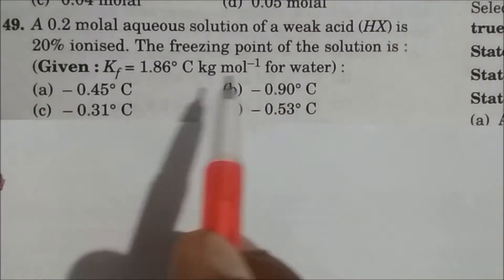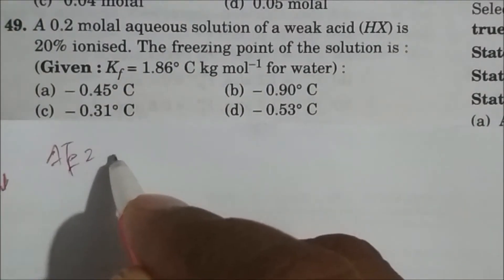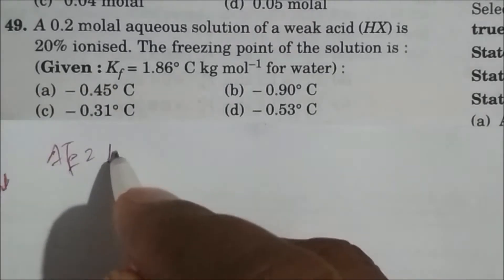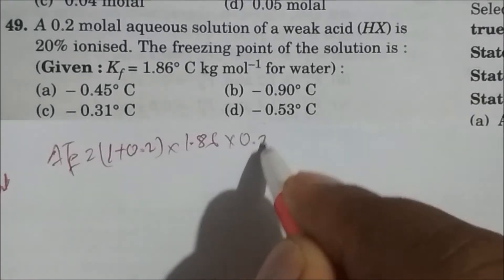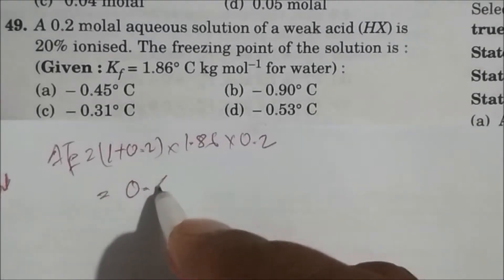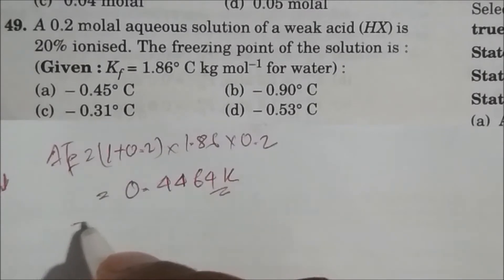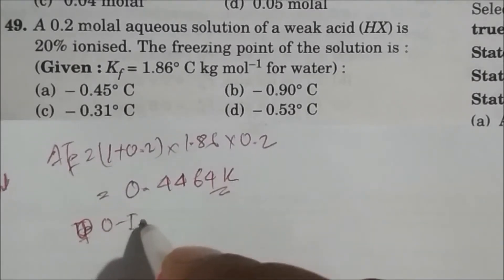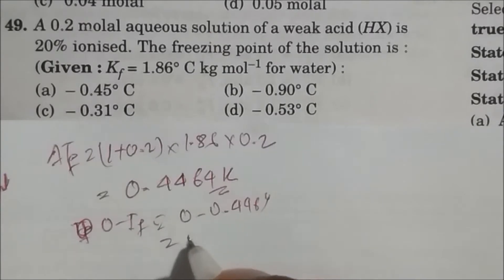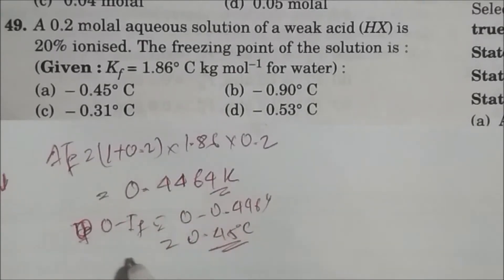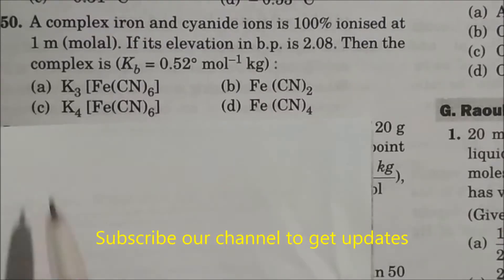A 0.2 molar solution of a weak acid is 20% ionized. We write delta tf = i × kf × m, where alpha = 0.2 and i = 1 + alpha = 1.2, kf = 1.86, and molarity = 0.2. On solving, delta tf = 0.4464 K, approximately 0.45. So the freezing point is 0 minus 0.4464, which is approximately minus 0.45 degrees Celsius. The answer is A.